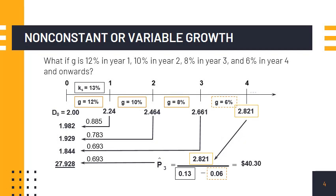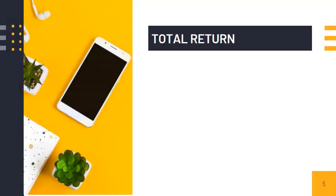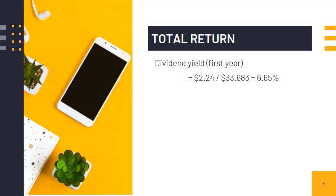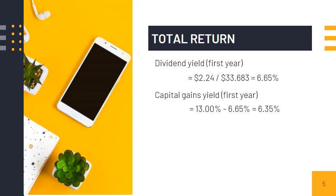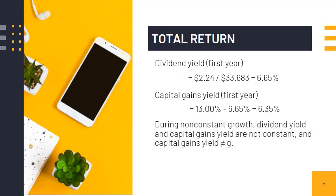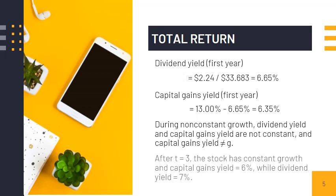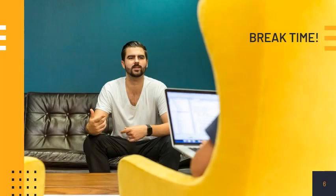We add all present values to arrive at P-sub-zero, the current market price today, amounting to $33.683. The total return is broken down as follows: dividend yield for the first year is D-sub-1 ($2.24) divided by P-sub-0 ($33.683), equaling 6.65 percent. Capital gains yield is total return 13 percent less dividend yield 6.65 percent, equaling 6.35 percent. Observe that capital gains yield does not equal the growth rate since this is non-constant growth — it will only equal the growth rate starting year four when growth becomes constant. In the next video we will discuss the remaining methods of stock valuation.